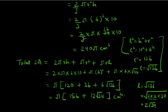So the total surface area of the remaining part is π(156 + 12√34) cm². In this way we found the total surface area and the volume of the remaining part after the cone was cut from the cylinder, using the formulas for volume of cylinder, volume of cone, curved surface area of cylinder, and curved surface area of cone.